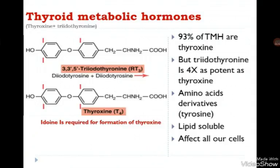93% of thyroid metabolic hormones secreted by the thyroid gland are thyroxine (T4). However, almost all thyroxine is eventually converted to T3 — triiodothyronine — before acting in our cells, because triiodothyronine is four times as potent as thyroxine.